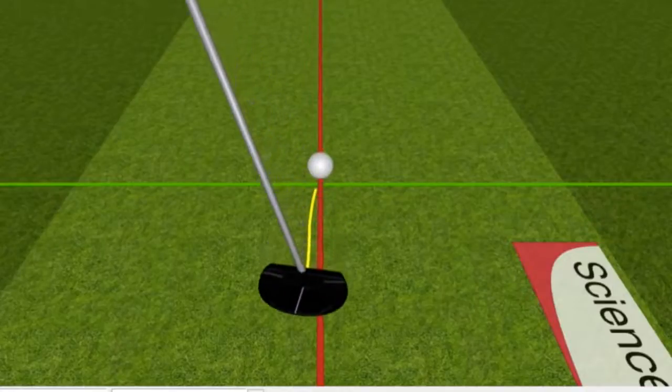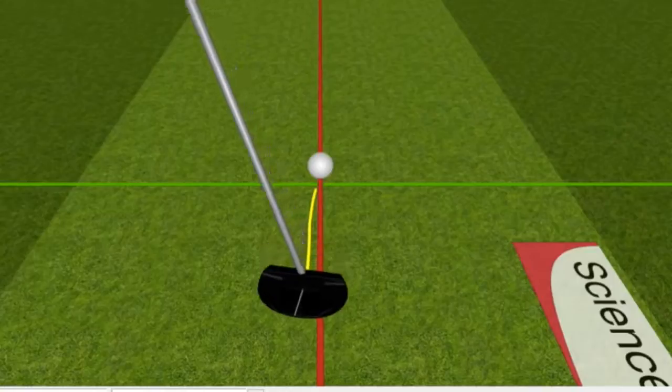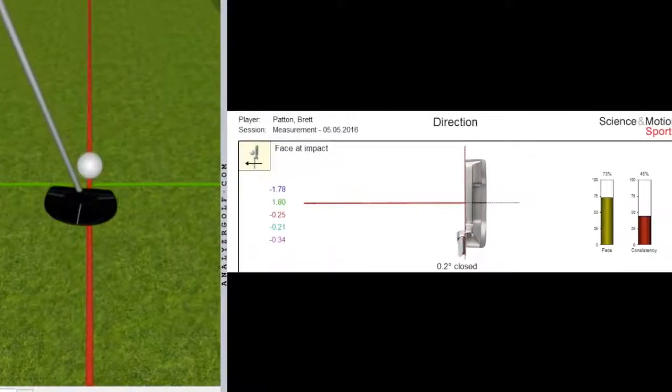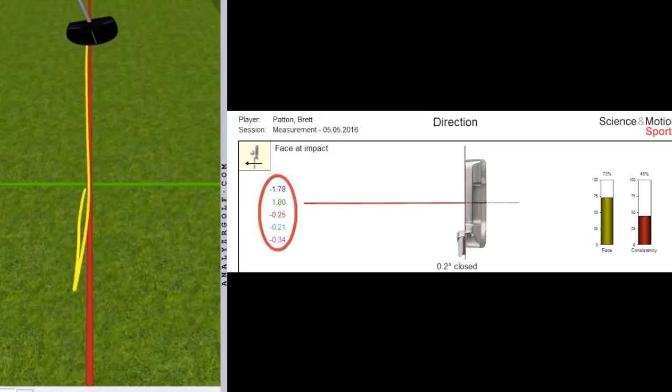That's definitely one of the reasons why he was experiencing that instability. As I take a look at the face at impact numbers during his first series of putts, you'll notice a face anywhere from almost two degrees open to two degrees closed. The last three strokes were okay, but those first two definitely concern me because that's way too big a dispersion pattern for him to perform at a high level.